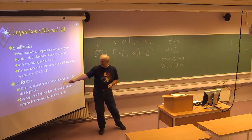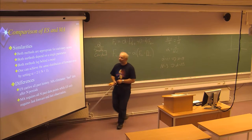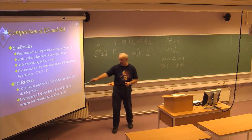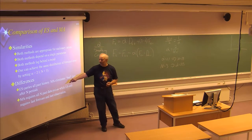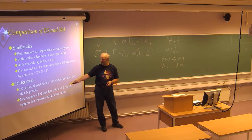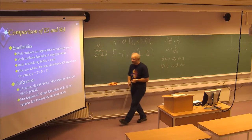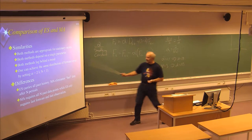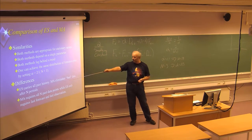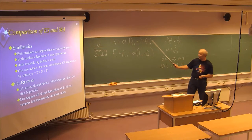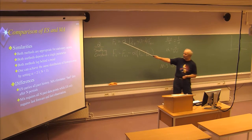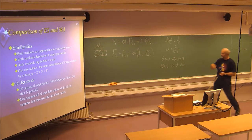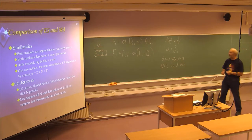Another difference: the moving average will require all n past data points, while exponential smoothing only requires the last forecast and the last observation. The last forecast depends on the previous observation, but when you have that single number, you can forget about the earlier data — you don't need to store it. So exponential smoothing requires only the last forecast and the last observation to get a forecast for the coming period.